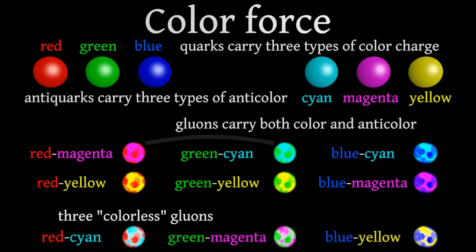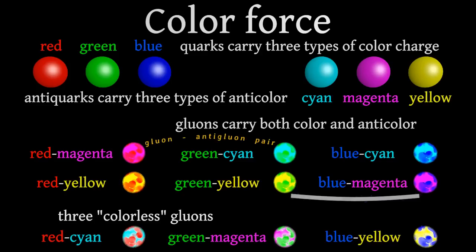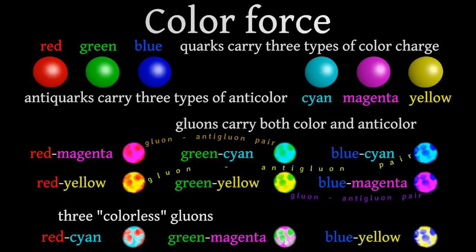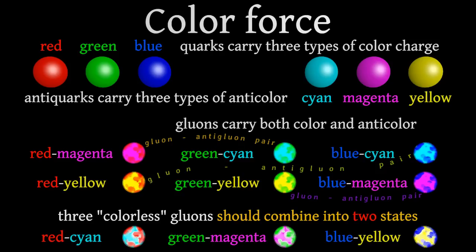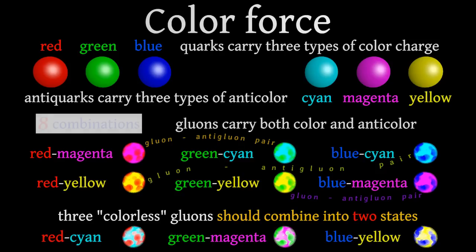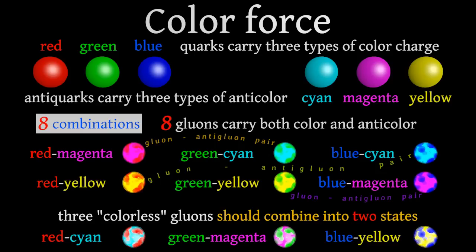Some mixing gluons form gluon anti-gluon pairs. According to quantum chromodynamics, three colorless gluons should combine into two states. So there are eight gluons in all, which carry the color charge between quarks or gluons themselves.